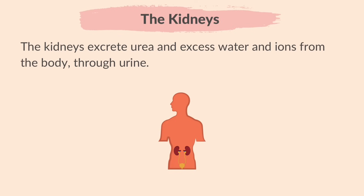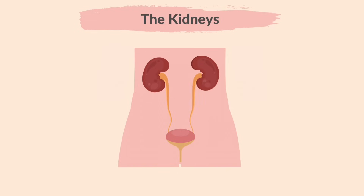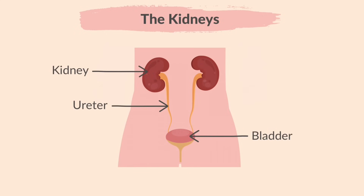The kidneys excrete urea and excess water and ions from the body through urine. Urea is toxic to the body in higher concentrations and must be excreted. The urinary system includes the kidneys, where the blood is filtered; the ureters, the tubes which connect the kidneys to the bladder; the bladder, where urine is stored; and the urethra, the tube from where urine flows out of the body. It is easy to confuse the names ureter and urethra, so make sure to learn these carefully.